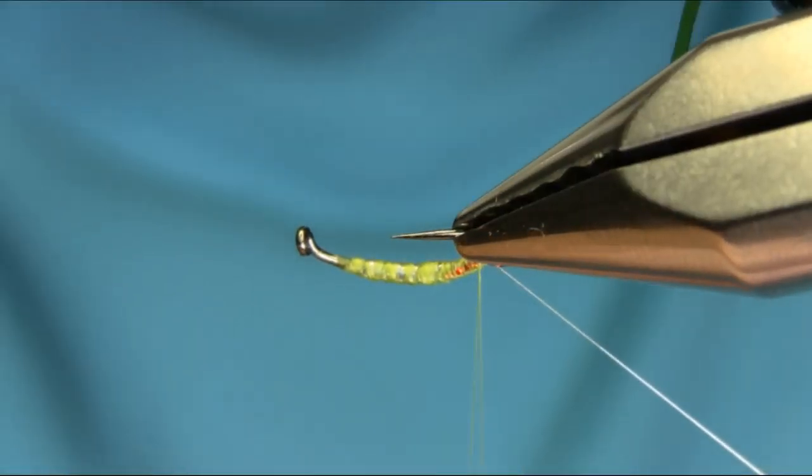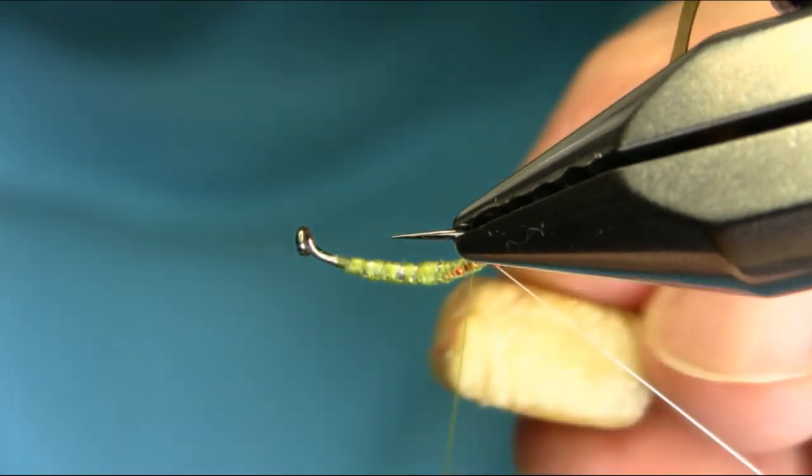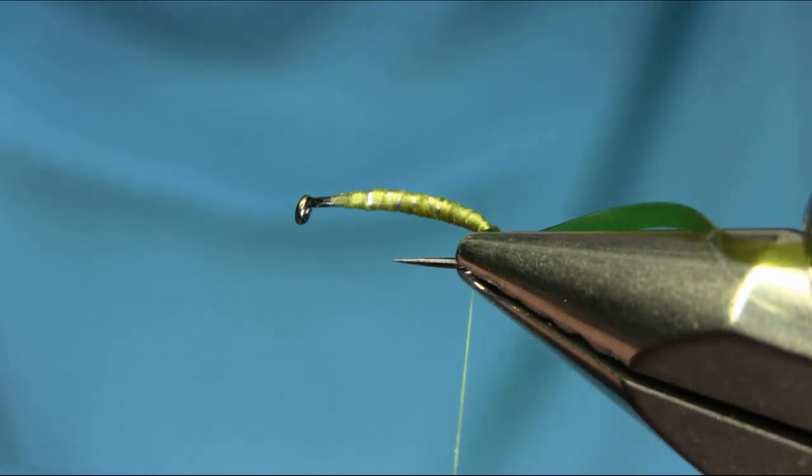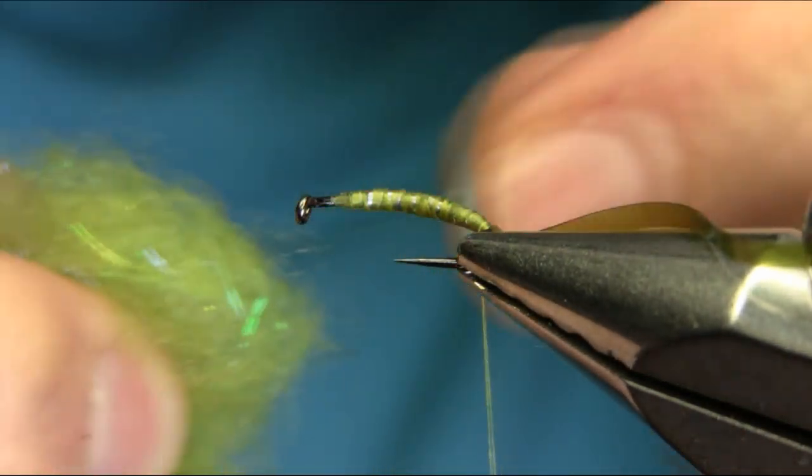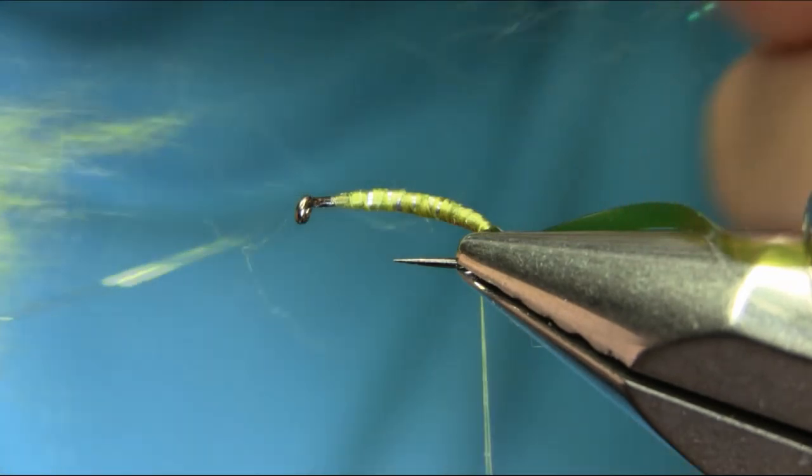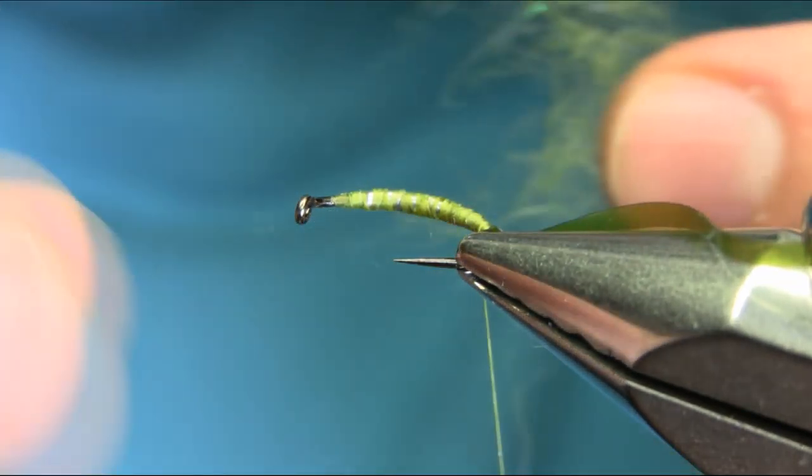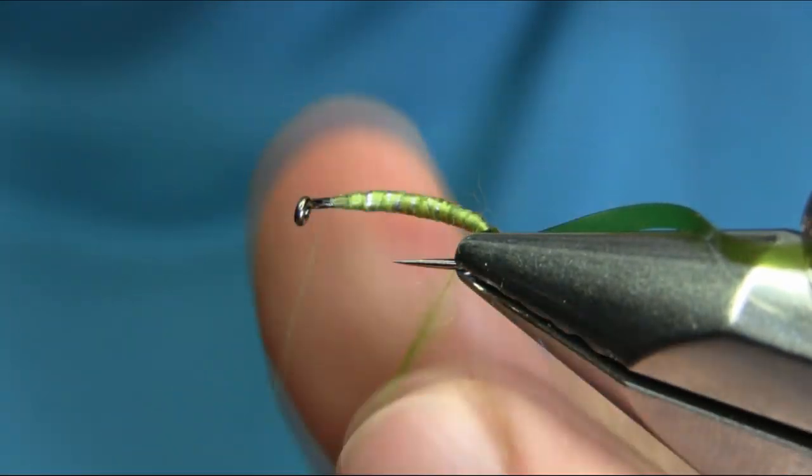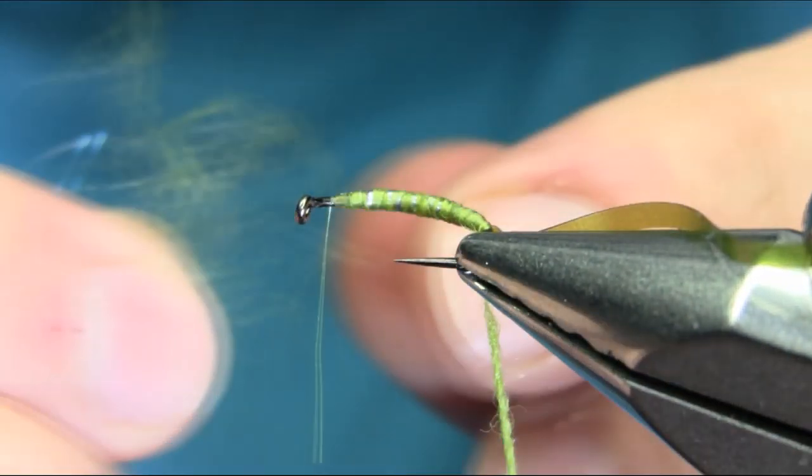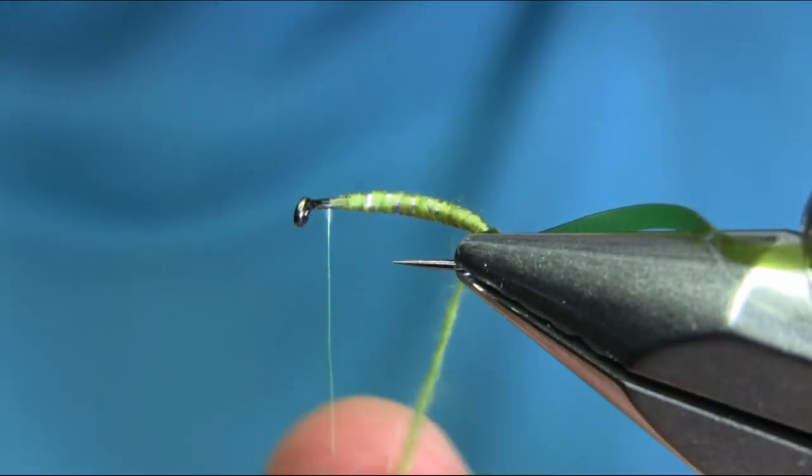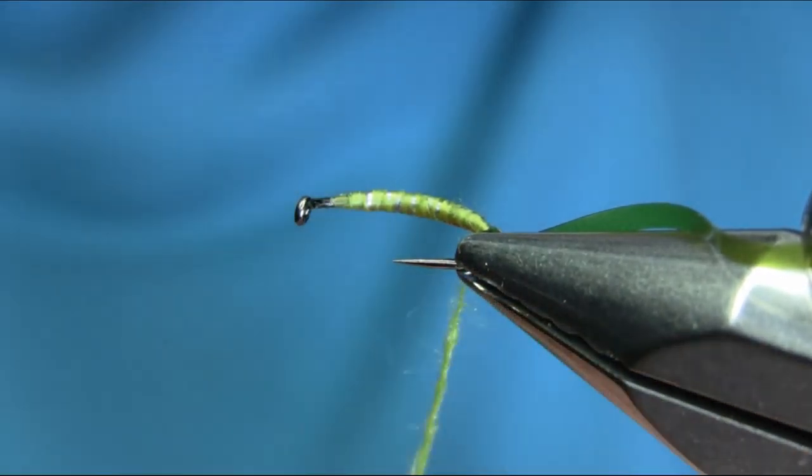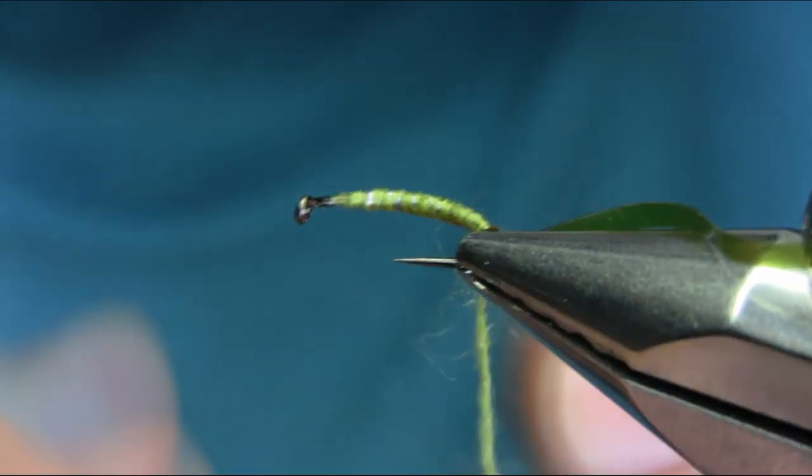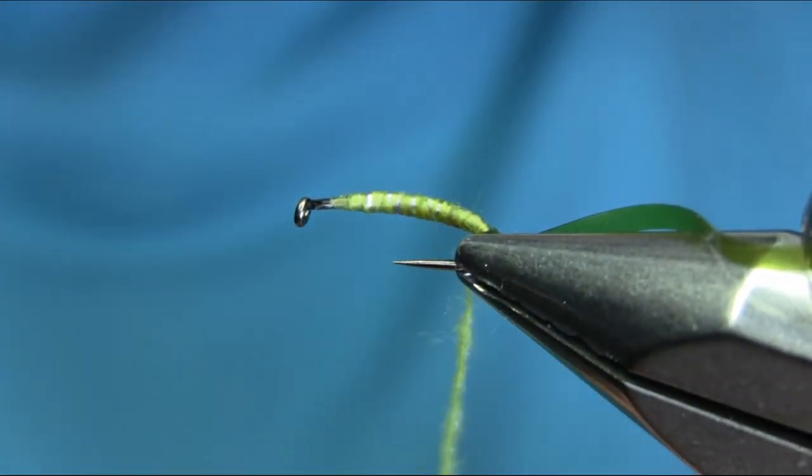Now rotate the vise. Add some marks on your thread. And dubbing. This is a lightish granny smith color. You probably watch this video I uploaded in the past. I'll put the link on the end screen. So you can use your own dubbing. You don't have to be exactly the same. This is synthetic dubbing. I made it with wool.